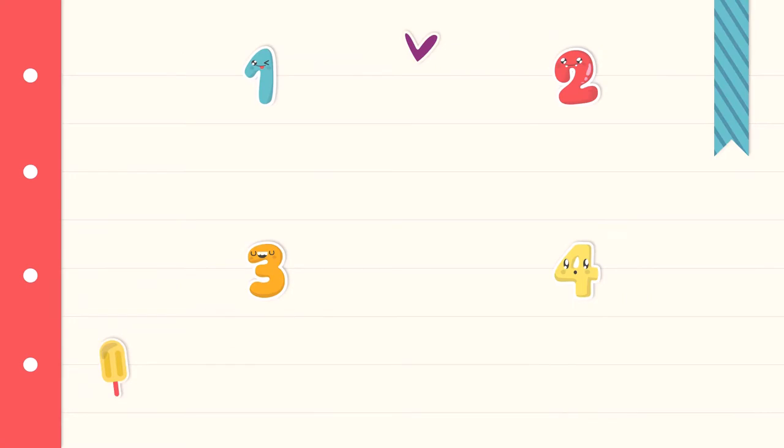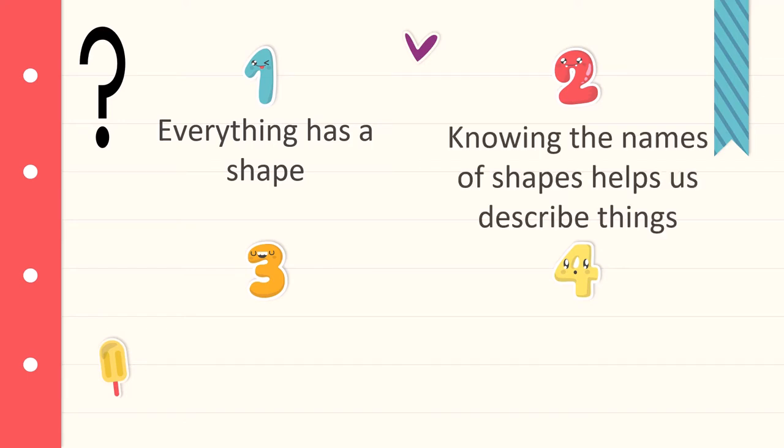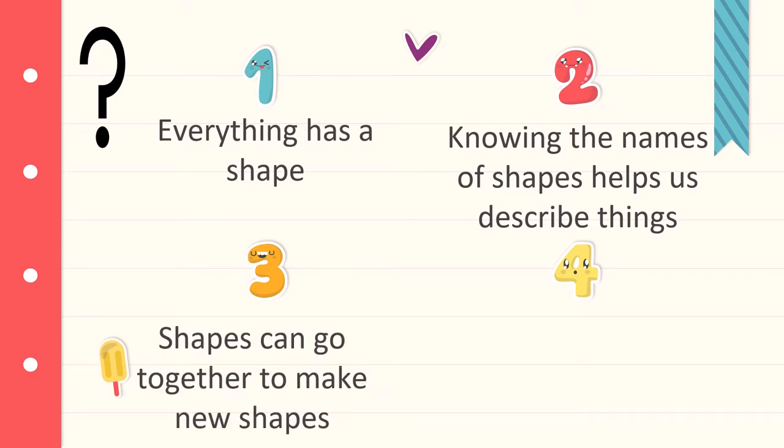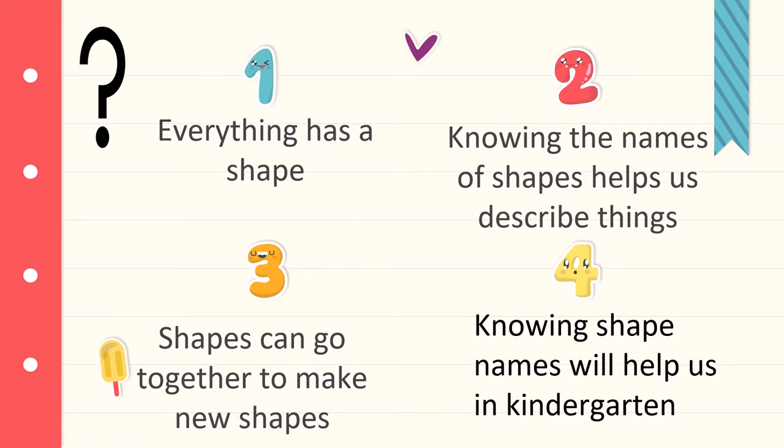So why do you think it's important that we learn about shapes? Well shapes are everywhere and when we know the names of the shapes it will help us be able to describe things. When we're talking or writing we can use shape words to help people understand what we're thinking about or talking about. Also shapes go together to make new shapes. Did you know two triangles can make a square? When we know the names of our shapes it will help us in kindergarten. It will help people understand what we're thinking about and it'll help us understand what others are thinking about.